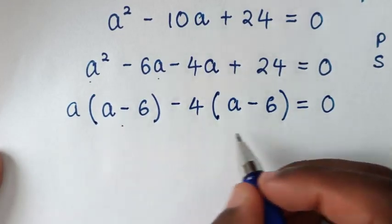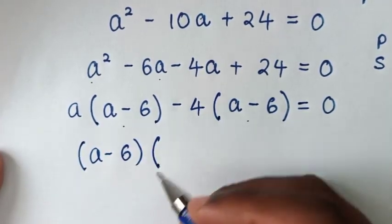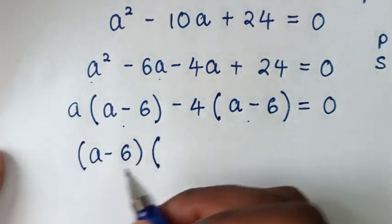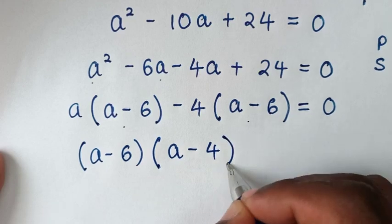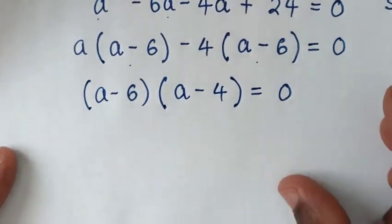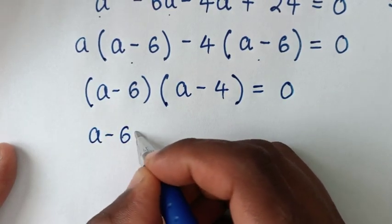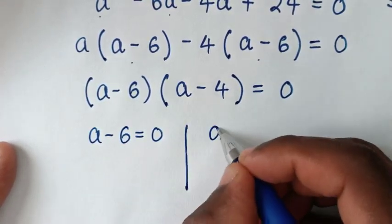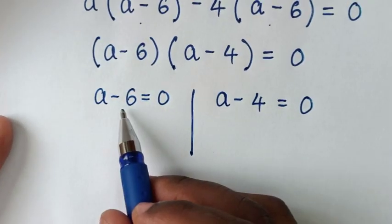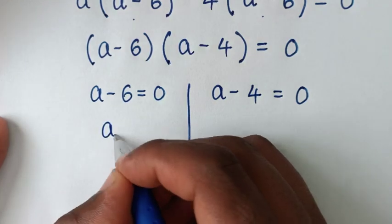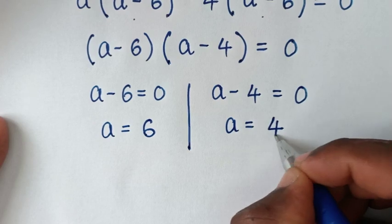Then, from here, we factor out (a minus 6), giving us (a minus 6)(a minus 4) equals 0. This gives two solutions: a minus 6 equals 0, so a equals 6; and a minus 4 equals 0, so a equals 4.